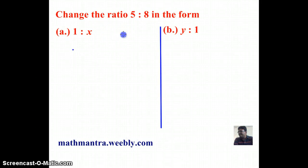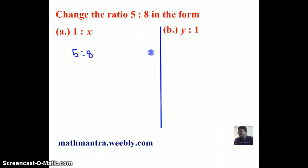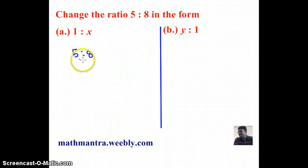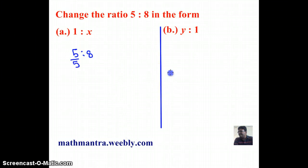Let's assume that $117 is divided into three parts. The first part is 2x, the second part is 3x, and the third part is 8x. When we add all these three amounts we must get 117, so 2x plus 3x plus 8x must be equal to 117.